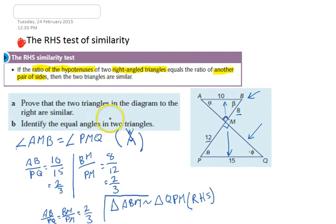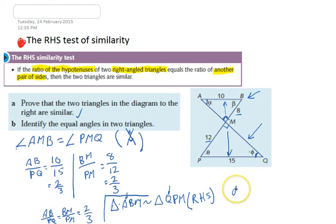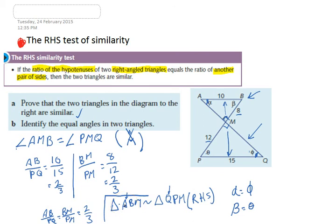We've proven they're similar through the RHS test. Now for part B: identify the equal angles. Because we've written the triangles in the right order — ABM and QPM — angle A lines up with angle Q, B lines up with P, and M lines up with M. So alpha equals the corresponding angle at Q, and beta equals theta. We've identified the two pairs of equal angles.